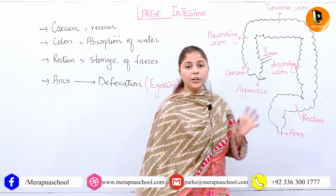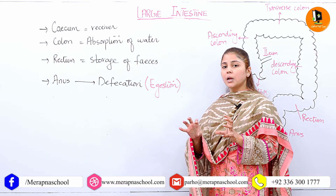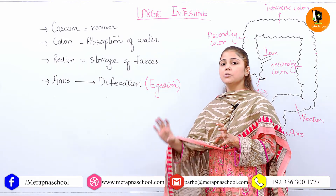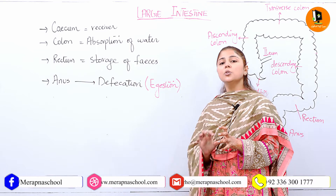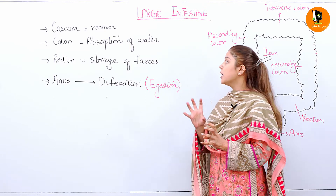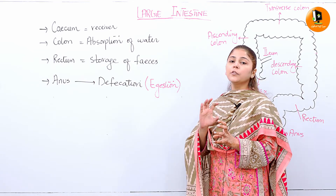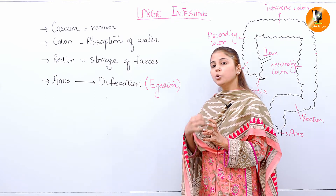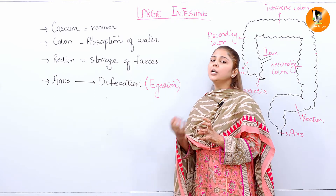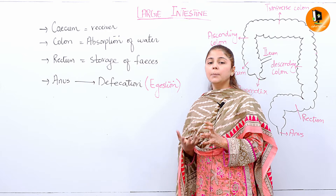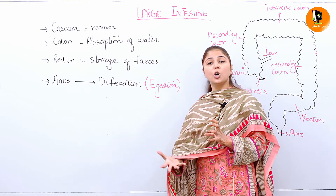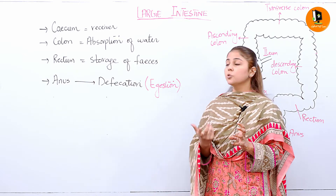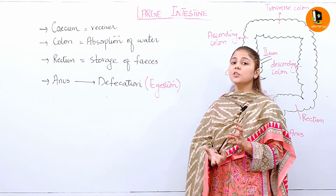Toh yahaan colon ka main function kya hai? Simply, har jagah — descending colon, transverse colon, ascending colon — this colon is basically responsible to absorb water from that undigested food. Aur jab absorption ho jaati hai, ultimately that food just becomes the solid waste.